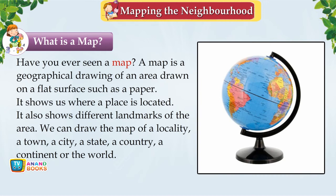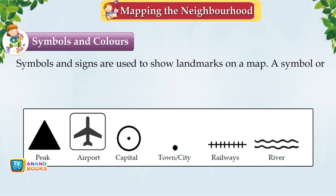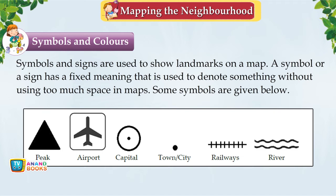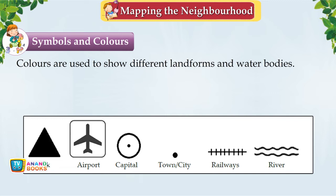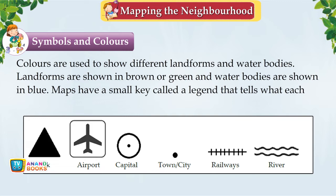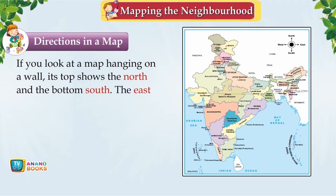Symbols and Colours. Symbols and signs are used to show landmarks on a map — each has a fixed meaning to denote something without using too much space. Common symbols include: peak, airport, capital, town or city, railways and river. Colours show landforms and water bodies — landforms in brown or green, water bodies in blue. Maps have a small key called a legend that tells what each symbol and colour stands for. In a map, top shows north, bottom shows south, east is right, and west is left.